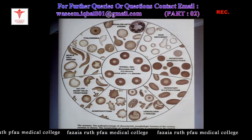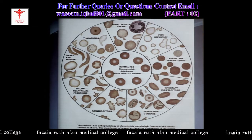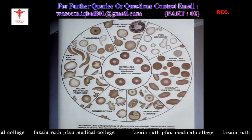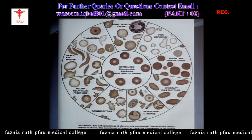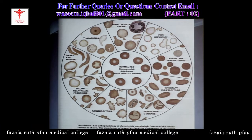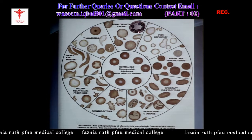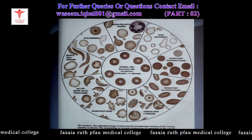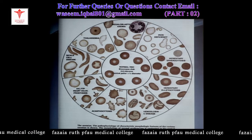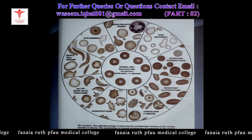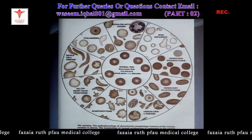To summarize the morphology: normocytic normochromic cells are seen in normal individuals and normocytic normochromic anemia. Iron deficiency anemia shows hypochromic, very small microcytic cells. Megaloblastic anemia shows macrocytosis and hypersegmentation of neutrophils. Inherited conditions — thalassemia shows hypochromic cells, target cells, and sometimes basophilic stippling. Spherocytosis shows small spheroidal cells. Sickle cell anemia shows sickle-like cells. Elliptocytosis shows elliptical cells.